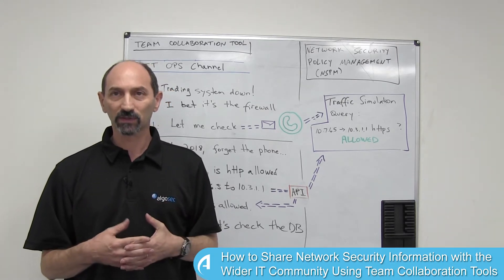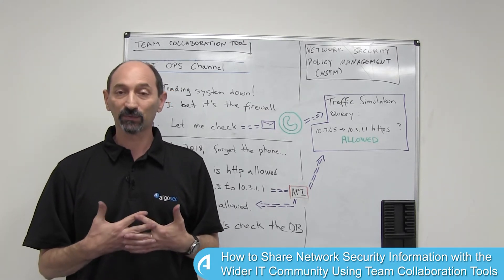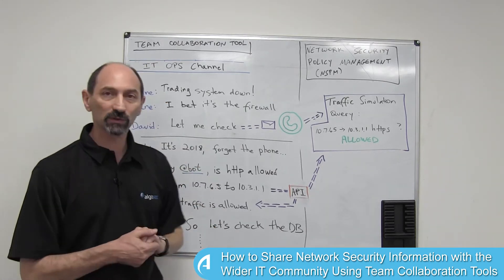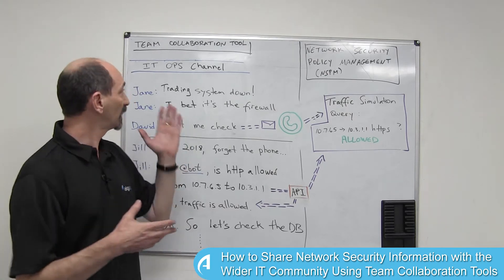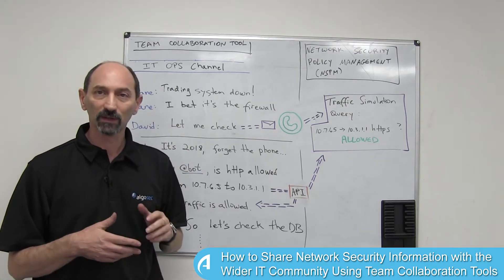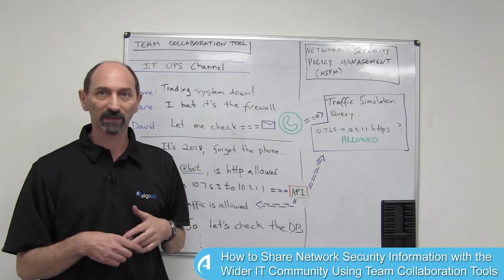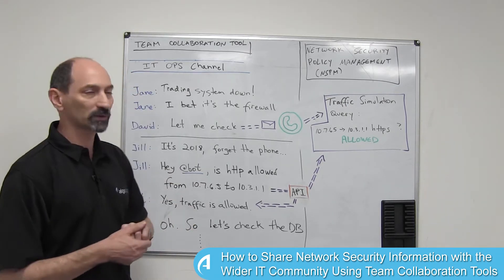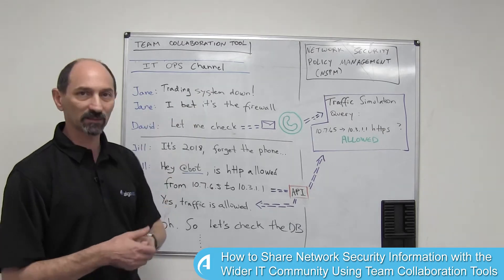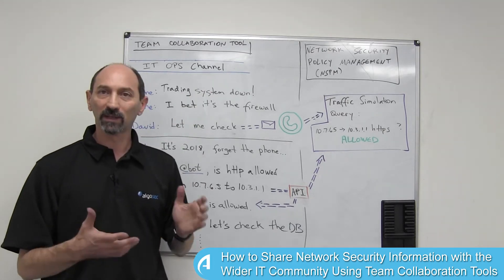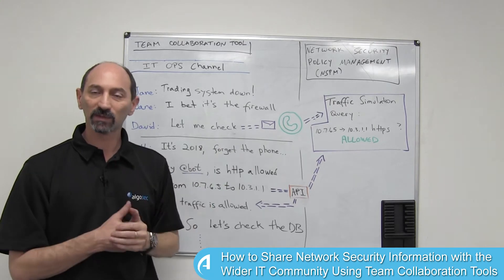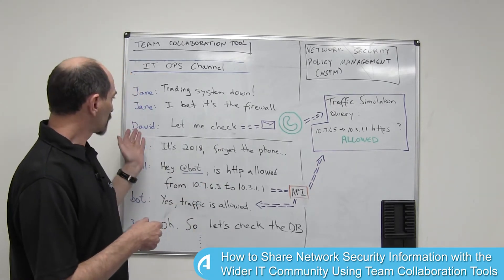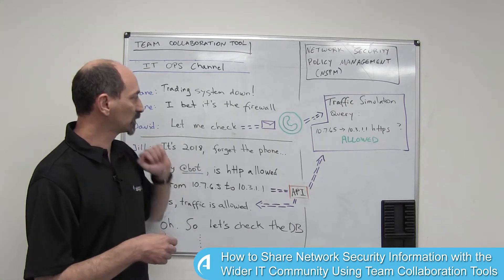However, there are other people in the organization that might benefit from access. Imagine you have a team collaboration tool at your disposal and the IT operations people use it to troubleshoot problems in the network. Imagine user Jane logging on to this channel and saying, 'The trading system is down, I bet it's the firewall' — a typical suspicion, maybe somebody misconfigured the firewall and broke something. So user David jumps in and says, 'Let me check.'